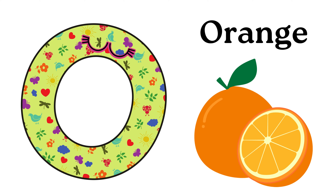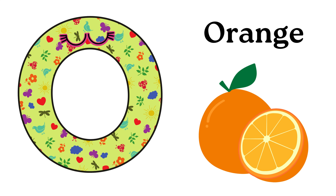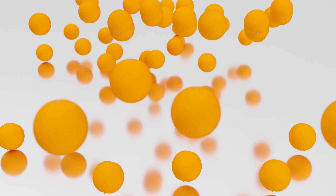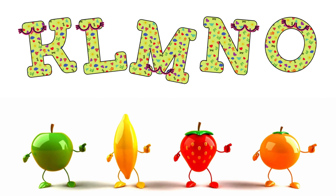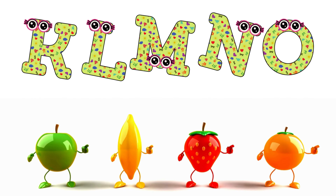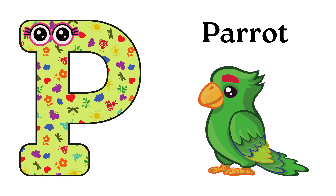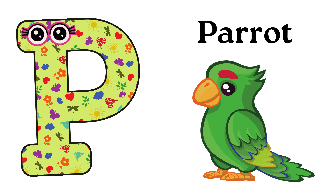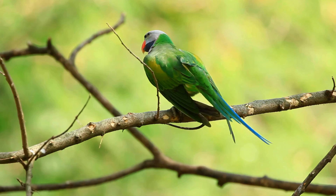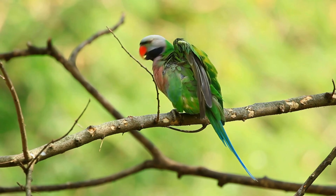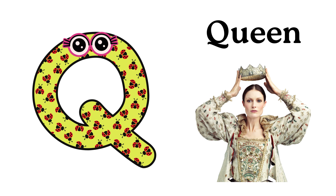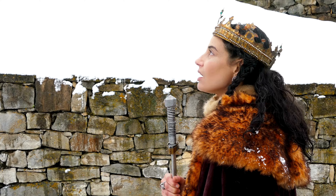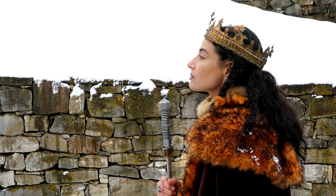O is for Orange. O-Orange, O-Orange, O-Orange. P is for Parrot. P-Parrot, P-Parrot. Q is for Queen. Q-Queen, Q-Queen, Q-Queen.